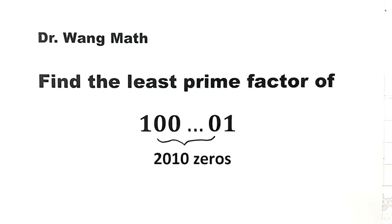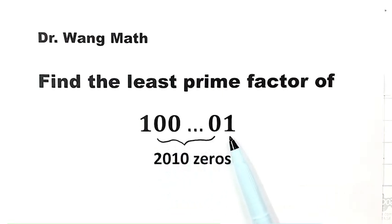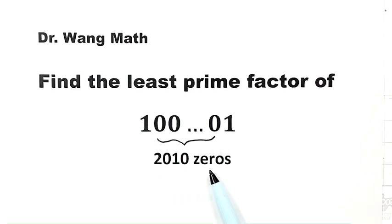In this video, we're going to solve a question from the Singapore Math Olympiad. The number is 1 followed by 2,010 zeros and then 1 — so between the two ones there are 2,010 zeros. To find the least prime factor, let's check one by one, starting from the smallest prime number.